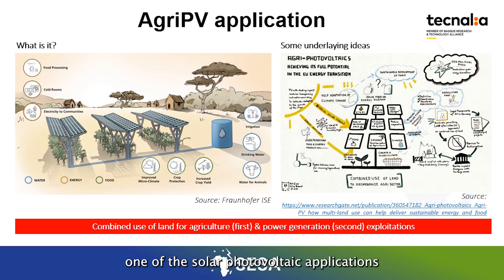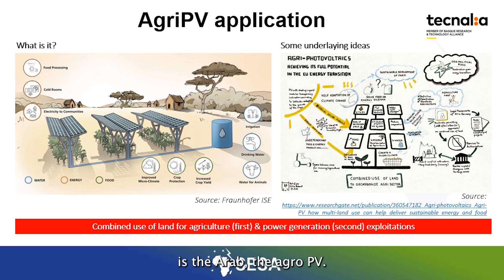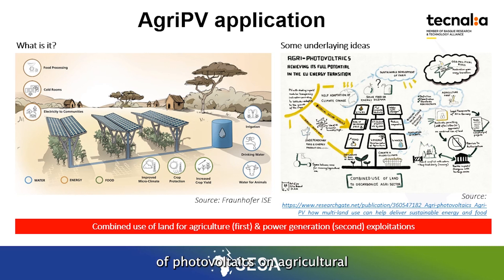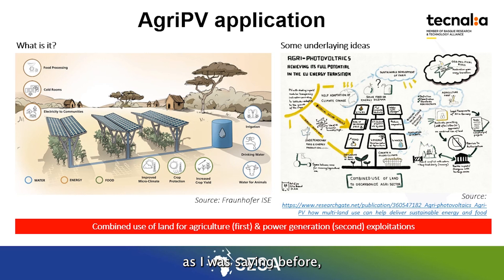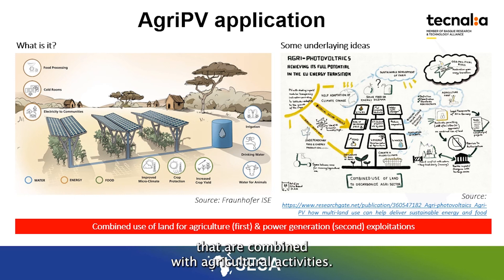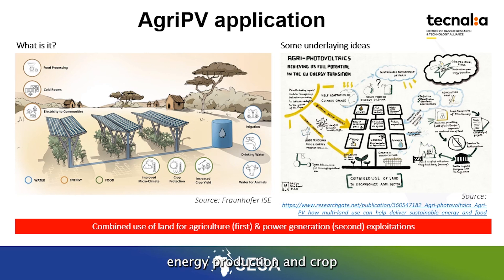One of the solar photovoltaic applications we wanted to highlight today is the agri-PV, also called agro-PV or agri-photovoltaics concept. It is basically the combination of photovoltaics and agricultural uses in the same piece of land. Within the infographics on the slide, you can see that the idea is to deploy in the same location some PV panels combined with agricultural activities.